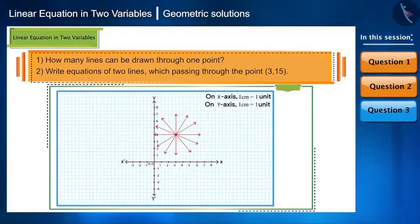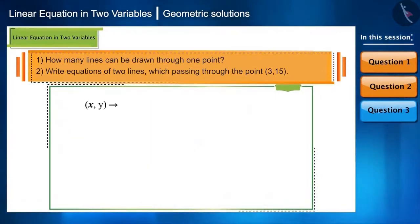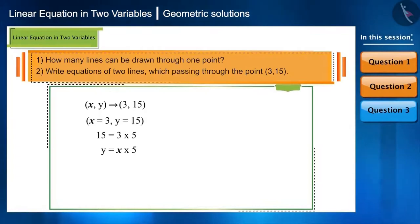And when countless lines can be drawn, all we have to do is write two such equations of lines which pass through the point 3, 15. Does this question seem difficult? The answers to these kind of questions can be derived from the given point itself. The given point has x and y coordinates. So if we examine it carefully, we can say that when x is 3, then y is 15. That is y is 5 times x. Y is equal to 5x. So this is how the first equation is formed.